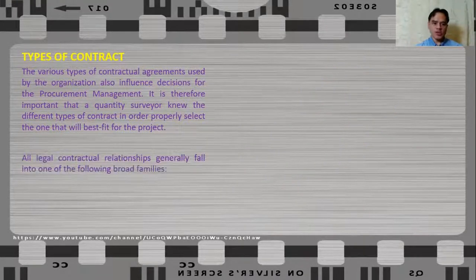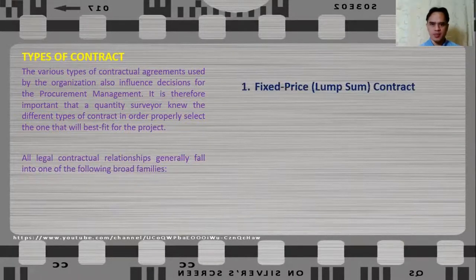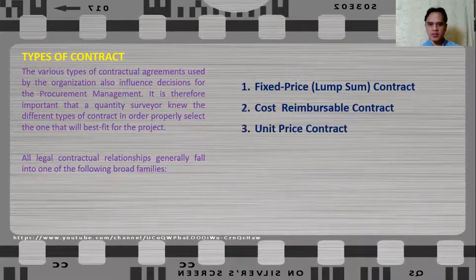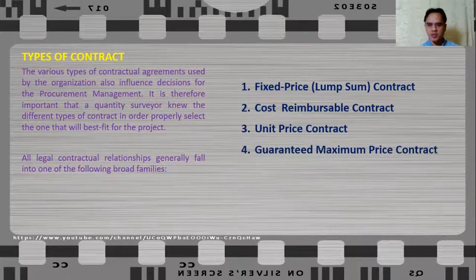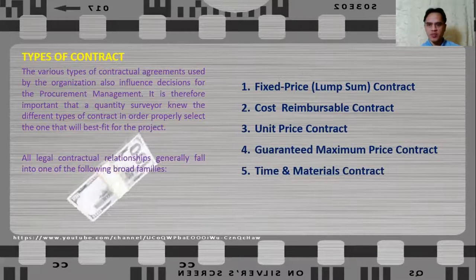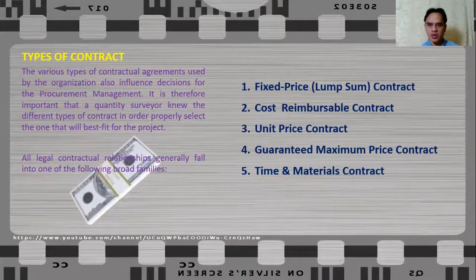All legal contractual relationships generally fall into the following broad families or categories: fixed price or lump sum contract, cost reimbursable contract, unit price contract, guaranteed maximum price contract, and time and materials contract. These are the types of contract based on how the contractor is paid.